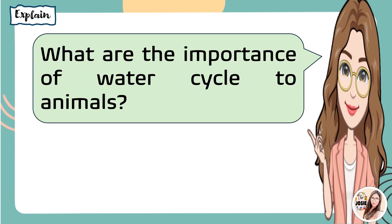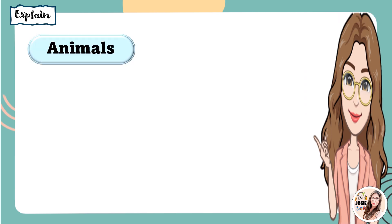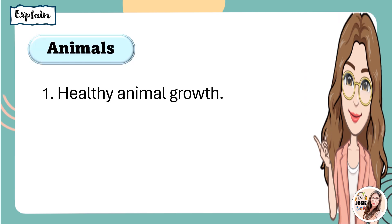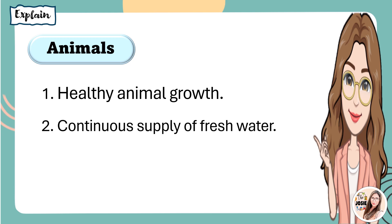What are the importance of the water cycle to animals? Very good. So, for animals, first, healthy animal growth. Next, continuous supply of fresh water. So, if there is a continuous supply of fresh water, there is enough water for drinking.